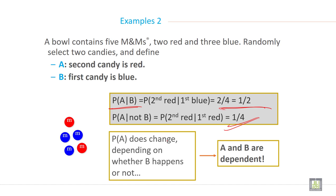So probability of A does change depending on whether B happens or not. So A and B are dependent events.